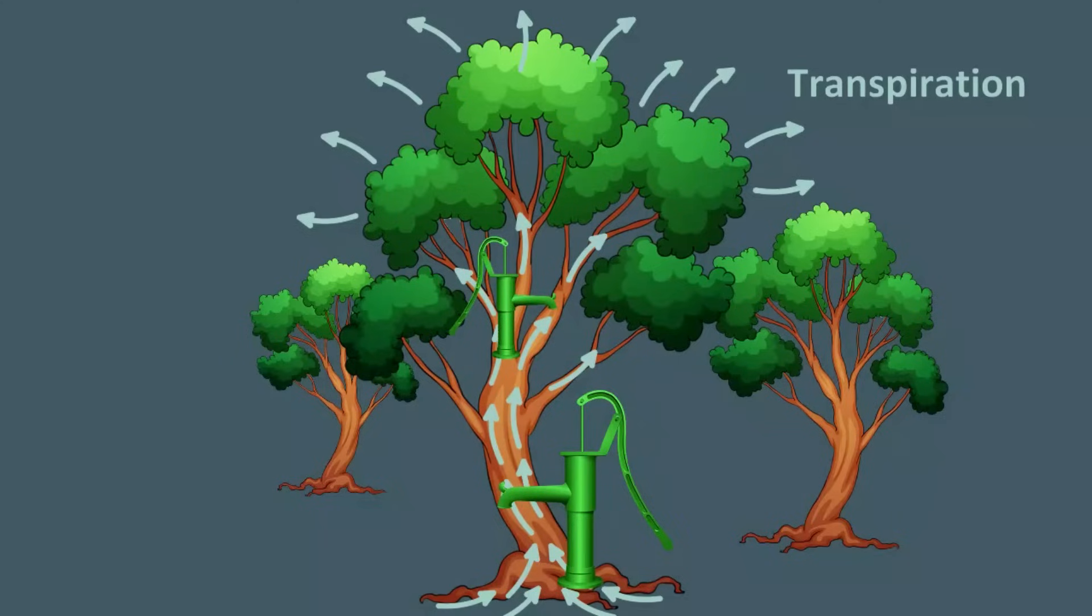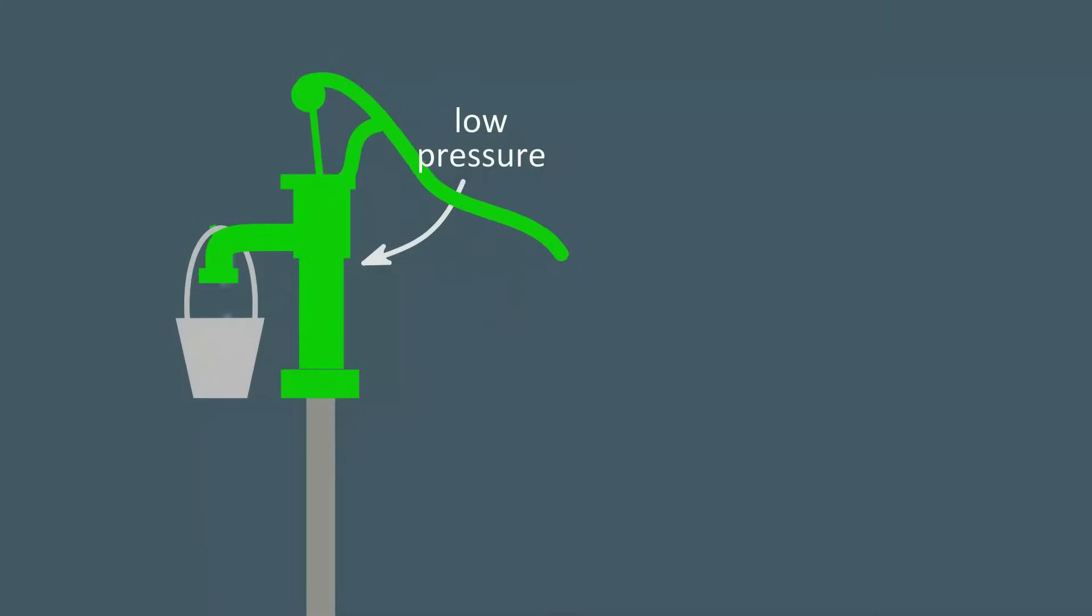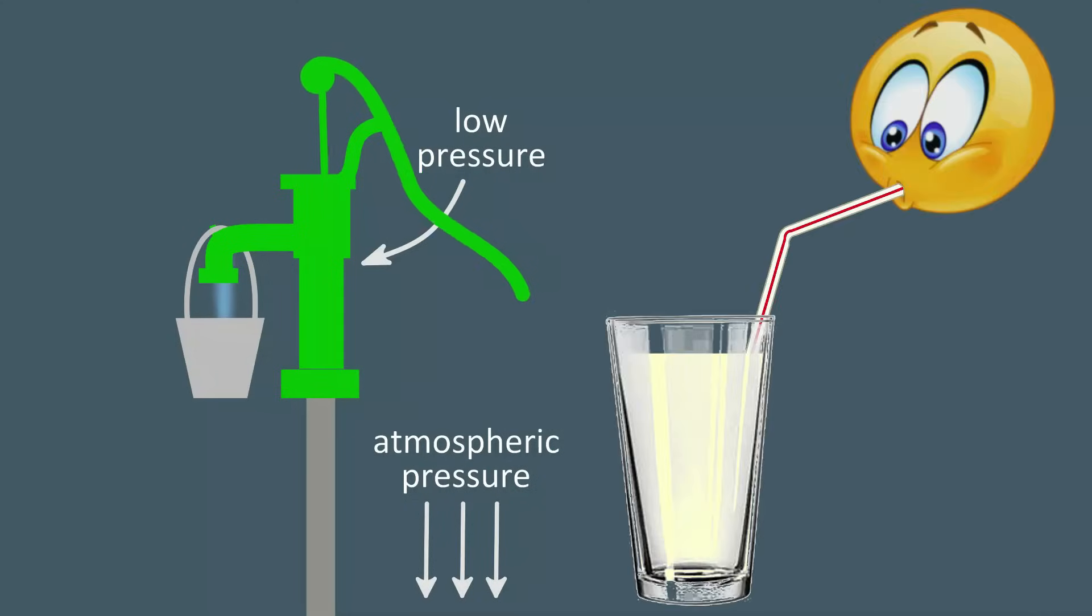Nevertheless, it is worthwhile reviewing how suction pumps work. These pumps work by creating low pressure at the top of a column of water. It is the pressure provided by the atmosphere that overcomes the weight of the water and pushes it up the pipe.